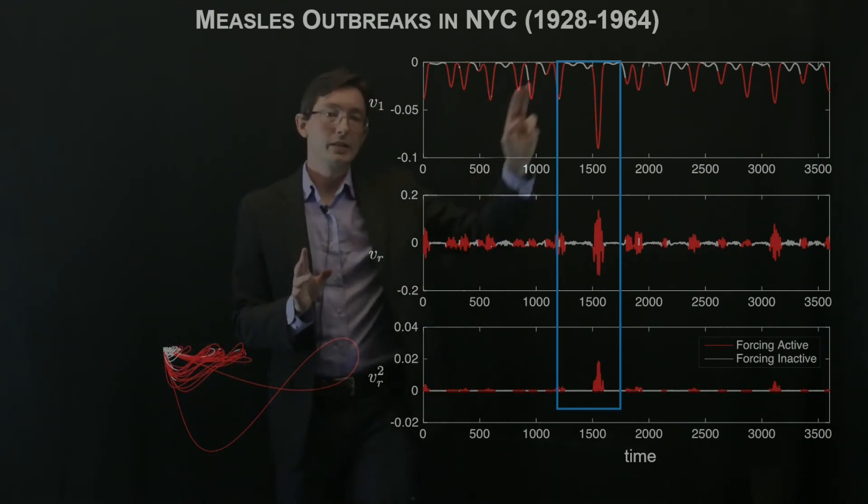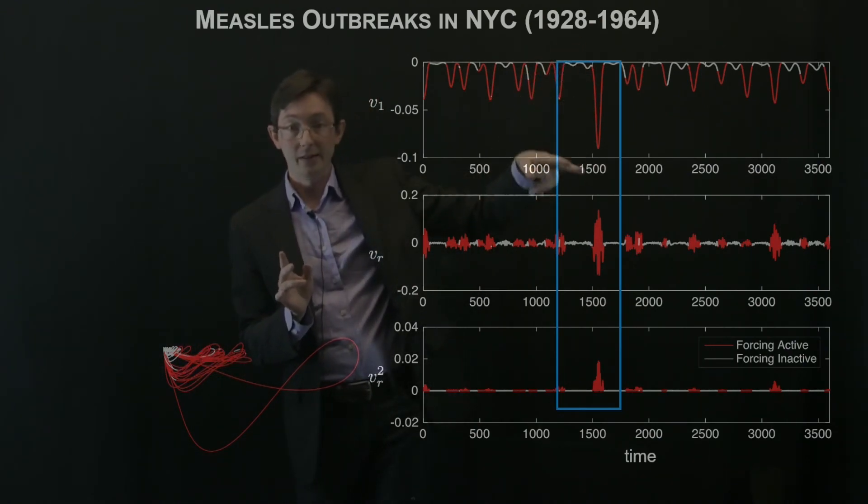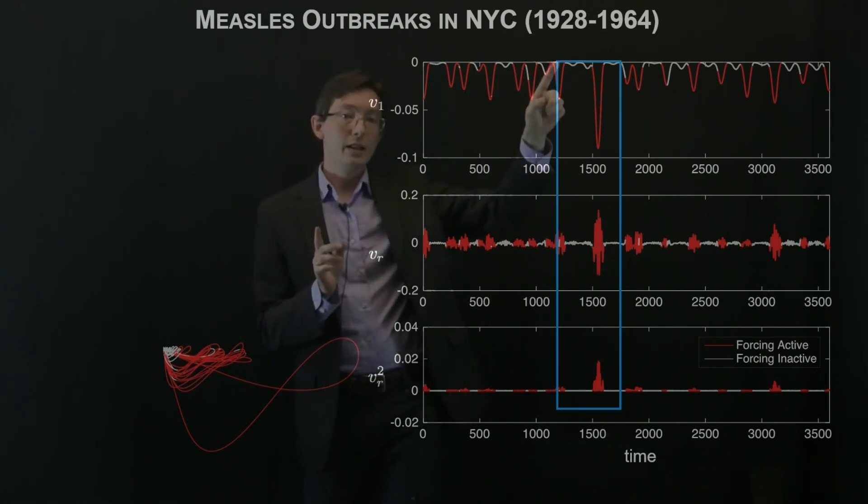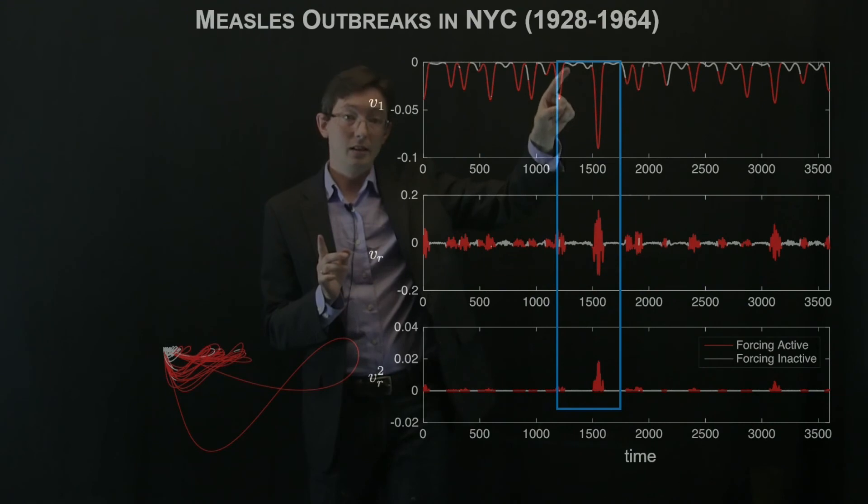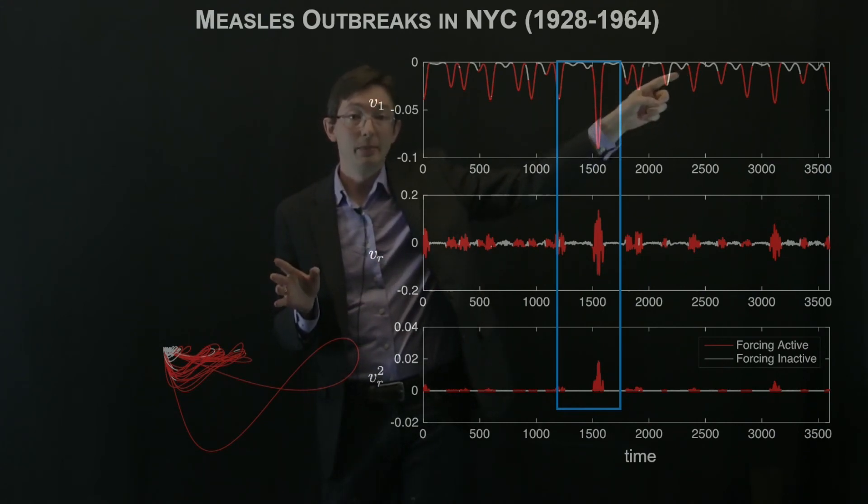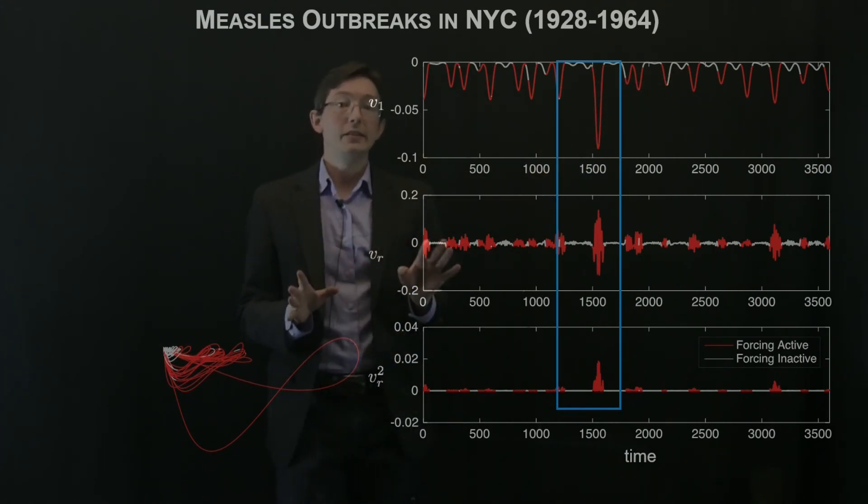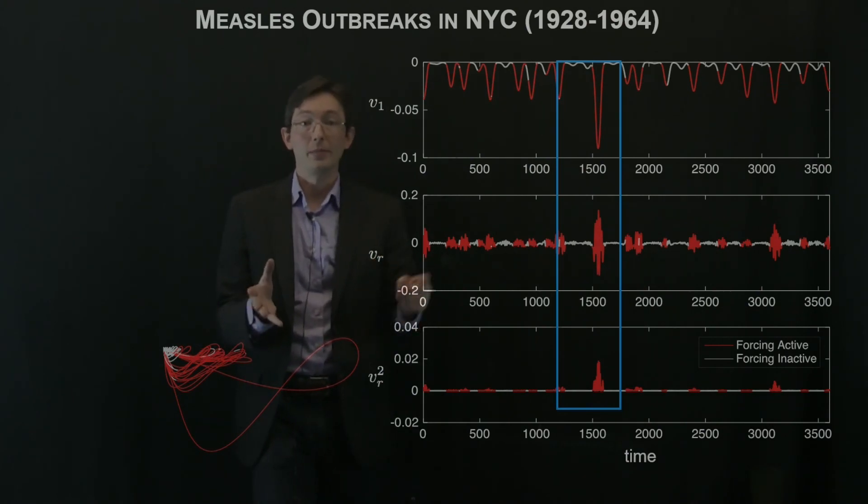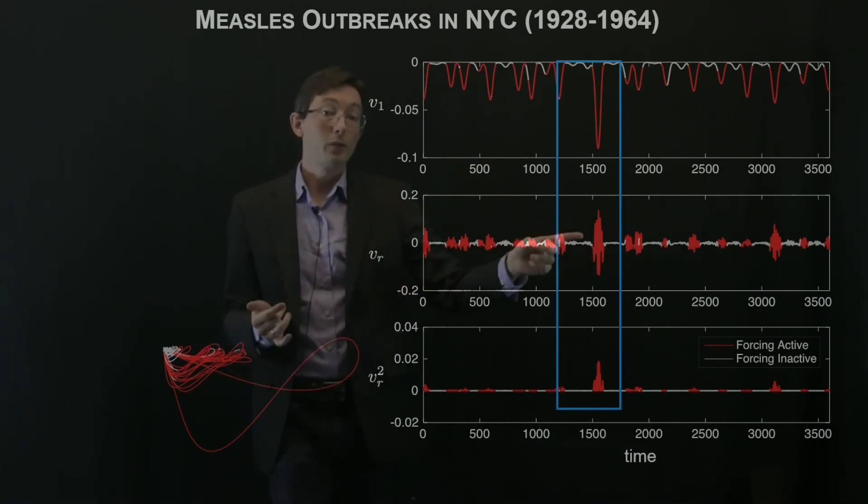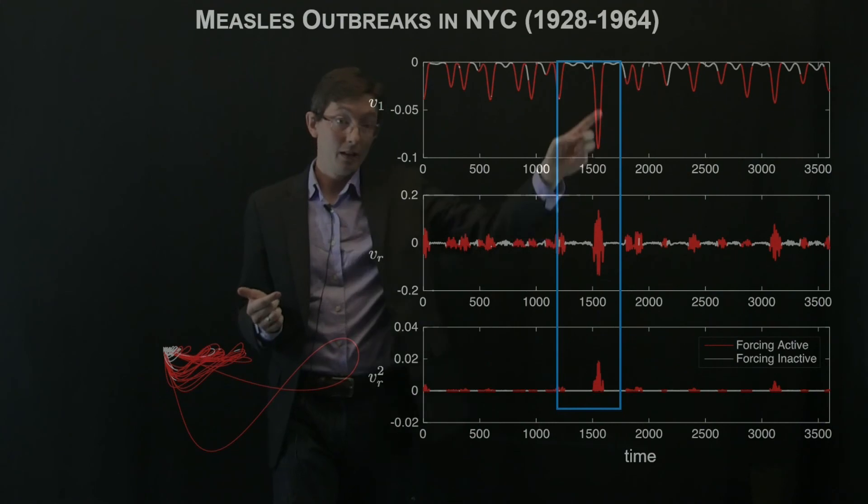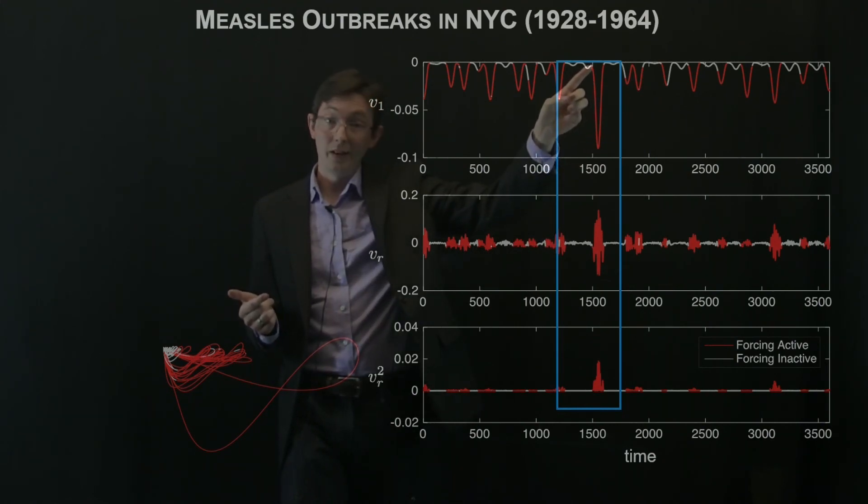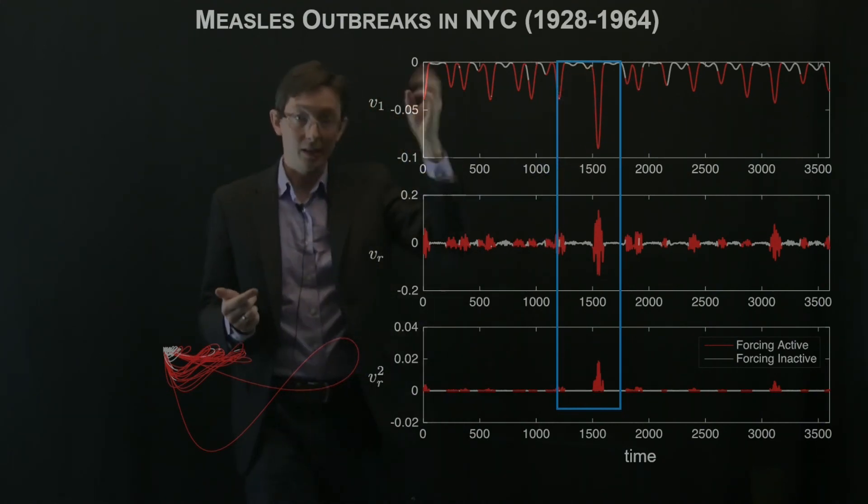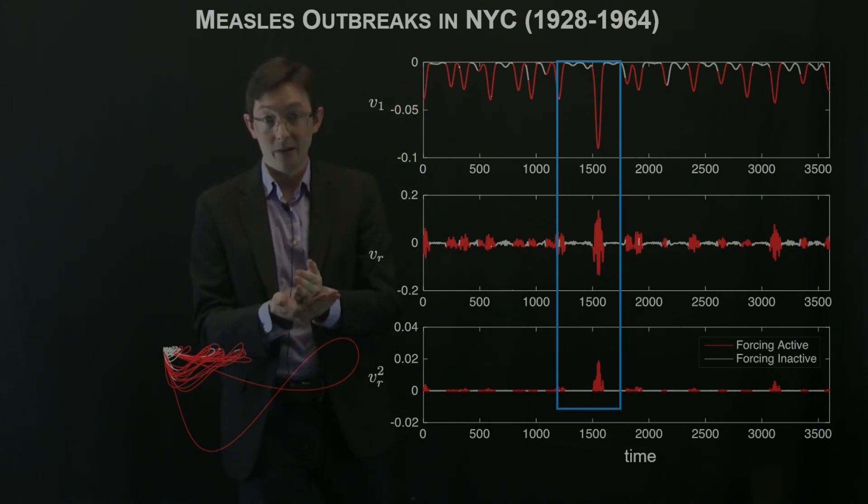So what I think is really interesting is if you zoom in on this, this is the worst outbreak in this time series. And if you zoom in, you actually see that there are a couple little dips in the measurement that could easily have been false predictions. Here you also see one. This is a little dip. It would be easy for you to say, oh no, there's going to be a measles outbreak because you see that dip. But the forcing didn't say that there's going to be an outbreak. It waited until right here where it's actually not even in a dip. And then the forcing kicks on clear as day and says there's going to be a measles outbreak.